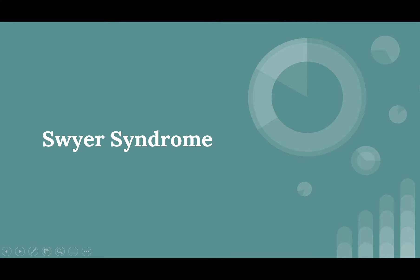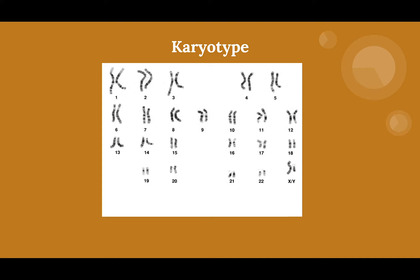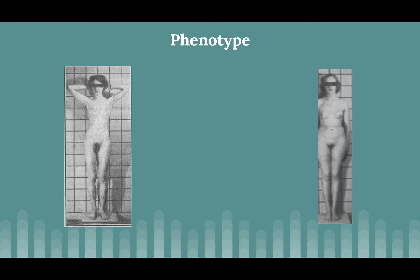Hello and welcome to my presentation on genetical biology with the topic of Swire syndrome, a disorder of sexual development with a genetic basis. What is interesting about this disorder is that when you look at the karyotype, the genotype, when you look at the 46 XY chromosomes, you see a male genotype. But when you look at the phenotype, you actually see a female phenotype. This incongruence and disagreement between the genotype and the phenotype is its main characteristic.